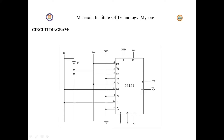IC 74151 is a 16-pin IC. Pin 8 will be grounded and pin 16 will be connected to VCC. We will take the three selection lines A, B, C to pins 9, 10, and 11 of IC 74151. The D input will be another dependent selection line connected to the NOT gate.